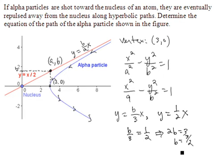So if b is three halves, or one and a half, then our equation for the path of the alpha particle